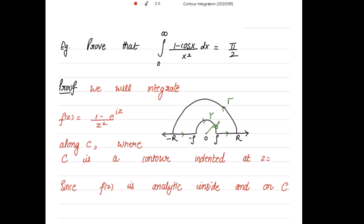We just change sines and cosines into e^(iota mz), where m = 1. So if it is (1 - cos x), just write (1 - e^(iota z)) and the denominator remains z². We integrate this f(z) along contour C, which is indented at z = 0, found by setting the denominator equal to 0. On the real axis we find z = 0, so we indent the contour there.